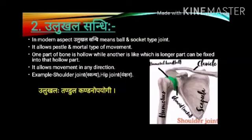Ullukhulla Sandhi: In the modern aspect, Ullukhulla Sandhi means ball and socket type of joint. It allows pestle and mortar type of movement i.e. Khalwatta. One part of a bone is hollow while the other longer part can be fixed into that hollow part. It allows movement in any direction. It is present in the shoulder joint and hip joint i.e. Khandha and Vankshana.